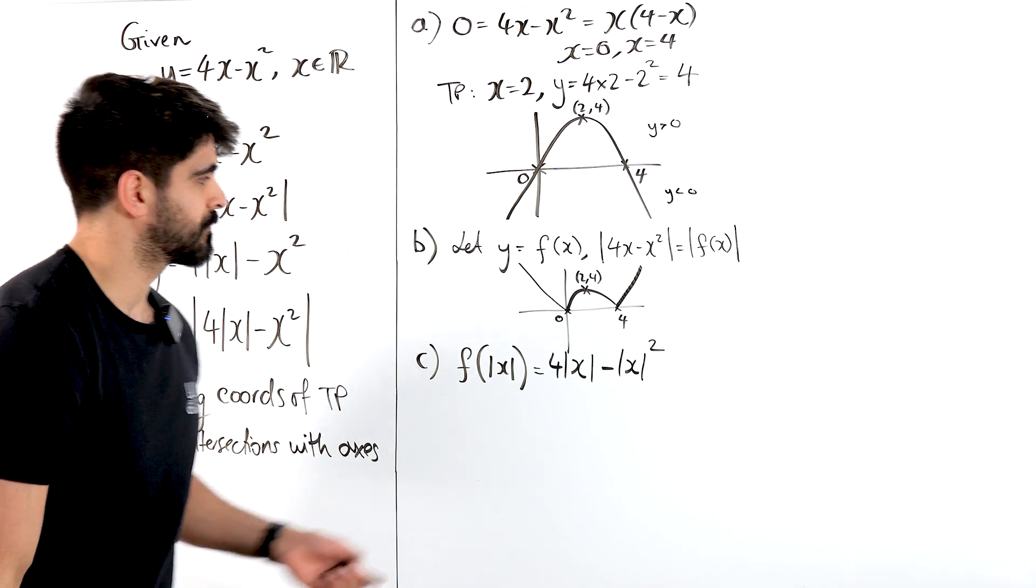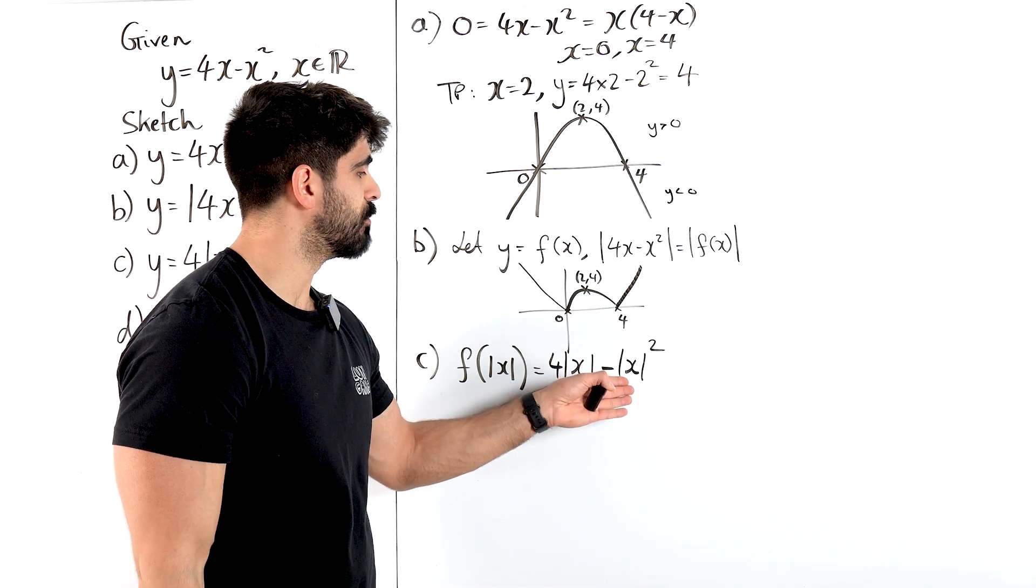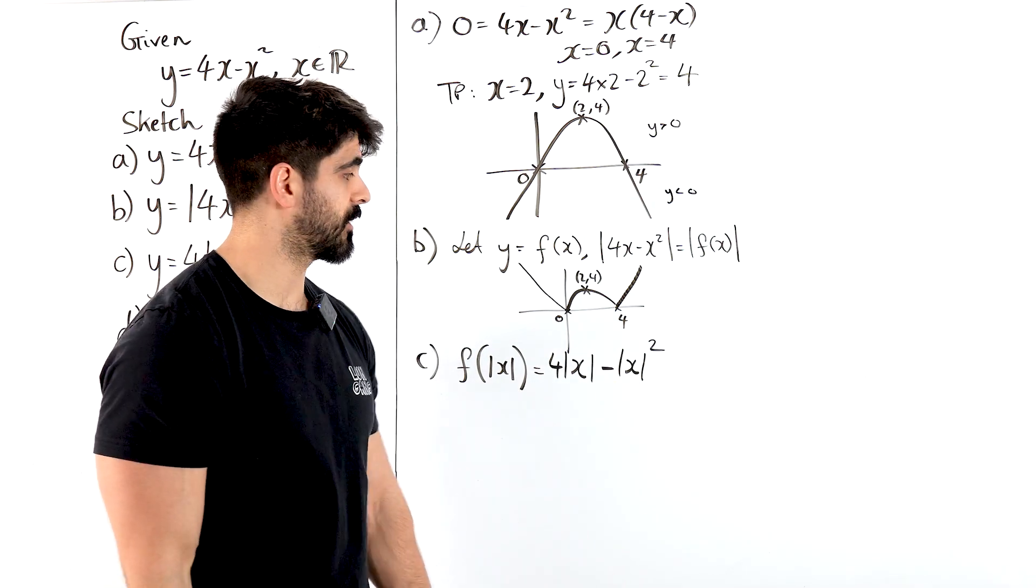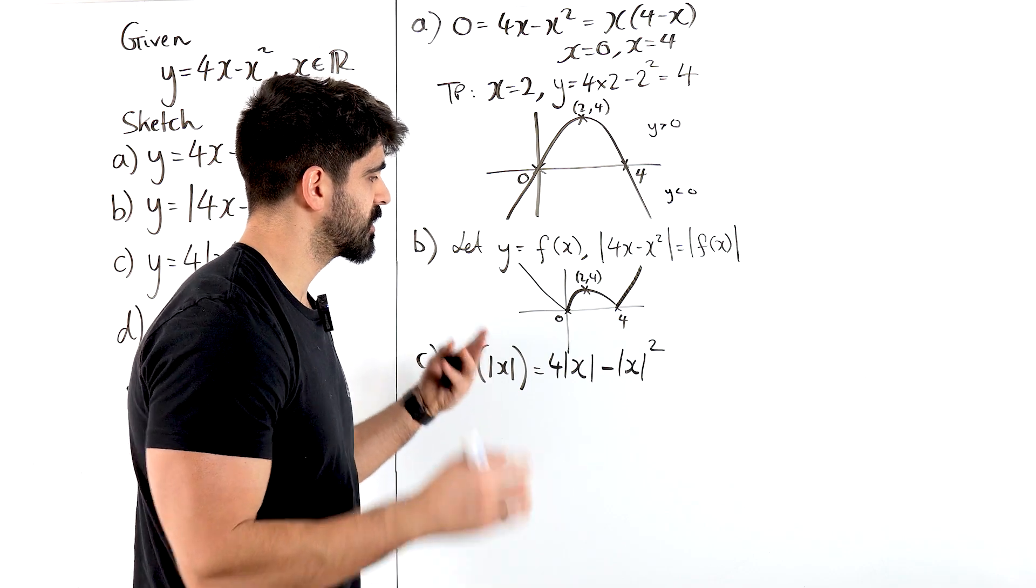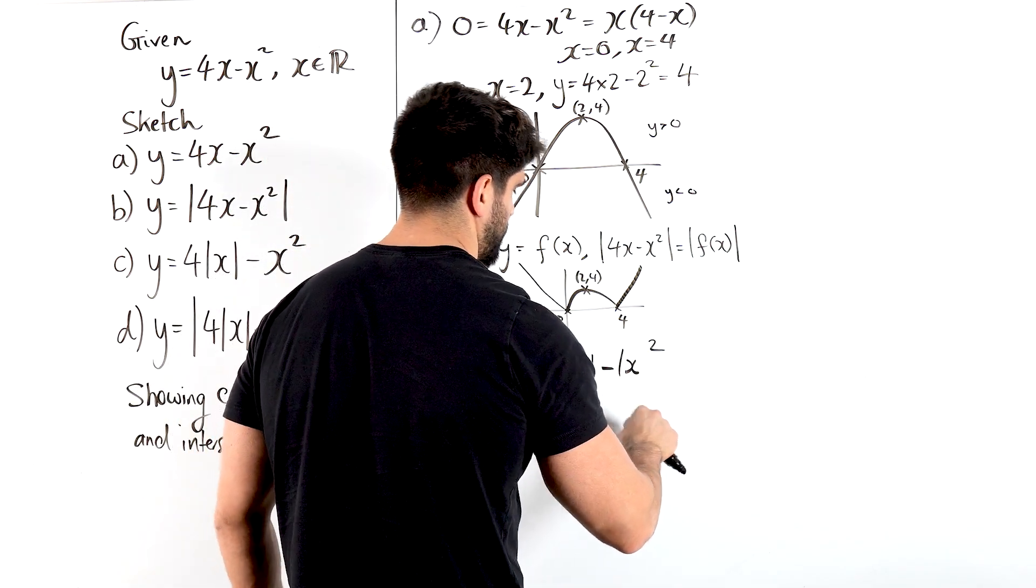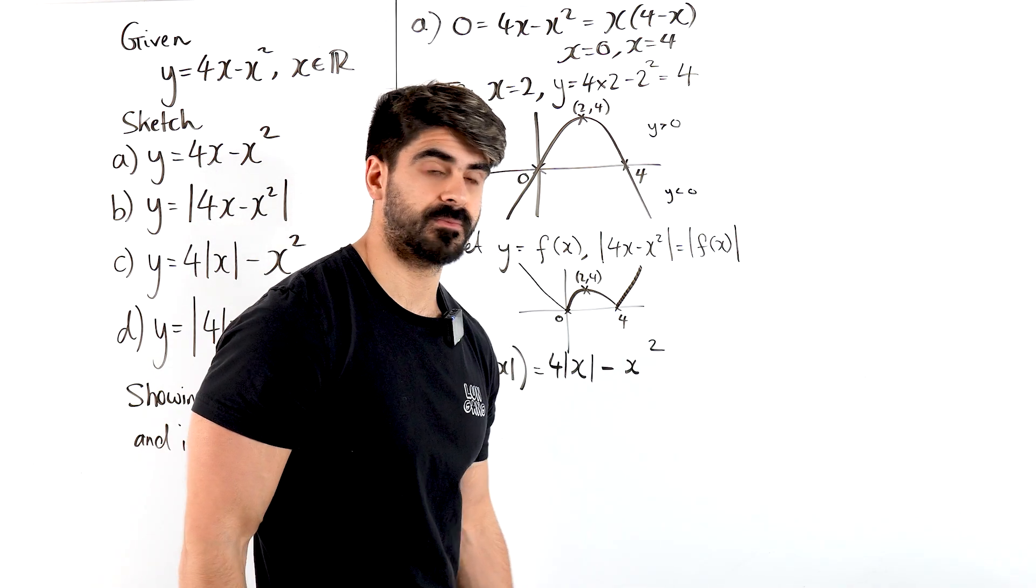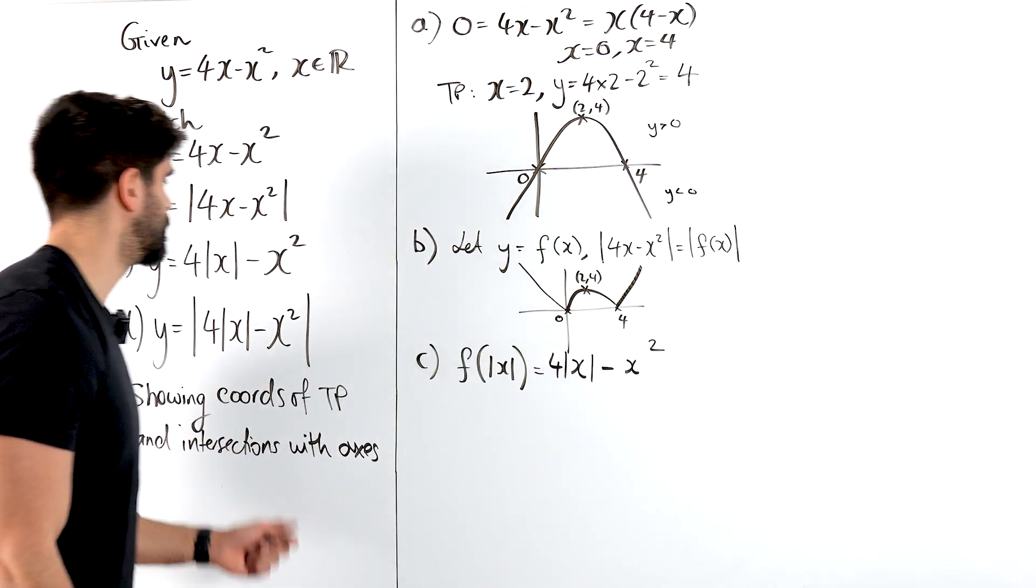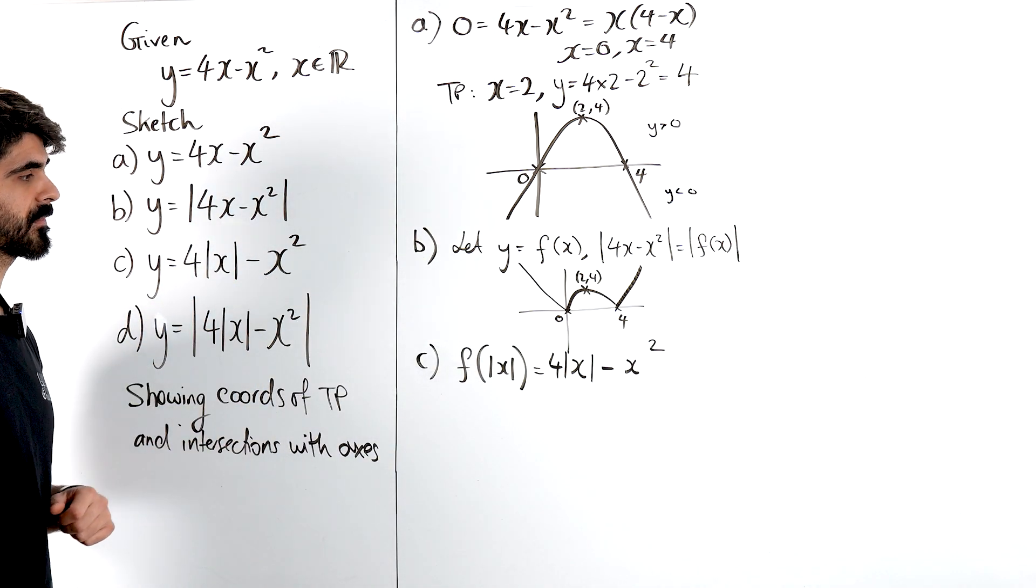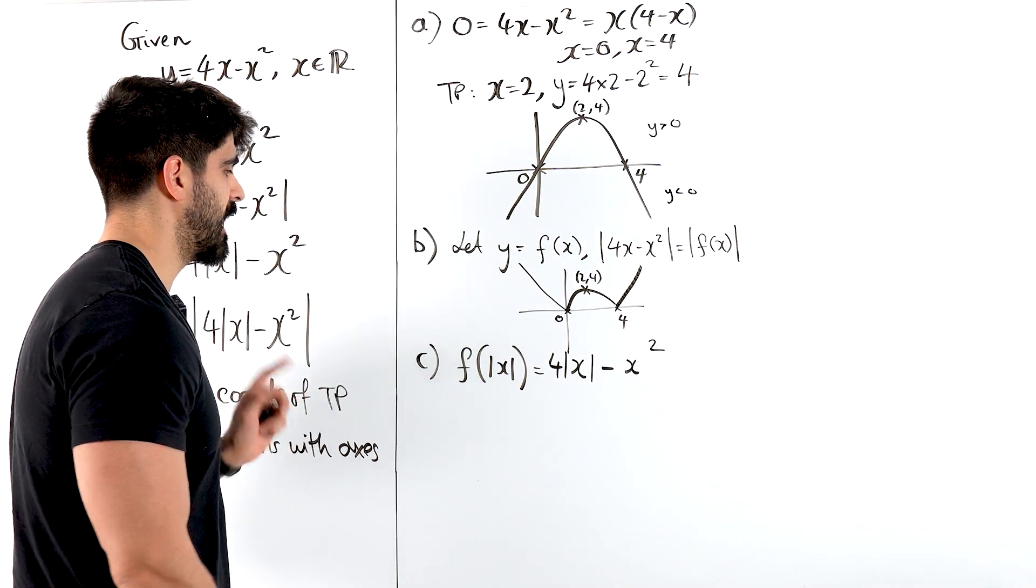But examiners can be cheeky here. When you square a modulus, nothing happens. Because when you modulus a negative number, it makes it positive anyway. So squaring a modulus actually does nothing. We can just leave it as x squared. And that's where they're being cheeky here. They've not put it there because they don't have to.